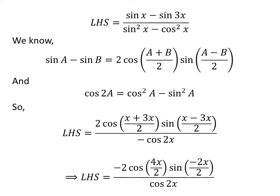Further simplification gives us the left hand side of the equation is equal to minus 2 times cosine of 4 times x upon 2 times sine of minus 2 times x upon 2, upon cosine of 2 times x.